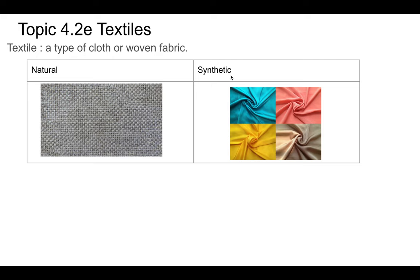Synthetic means that it's made by man — when you see 'synth,' it means it's not made naturally. Then we've got natural fibers, which make a natural type of cloth.